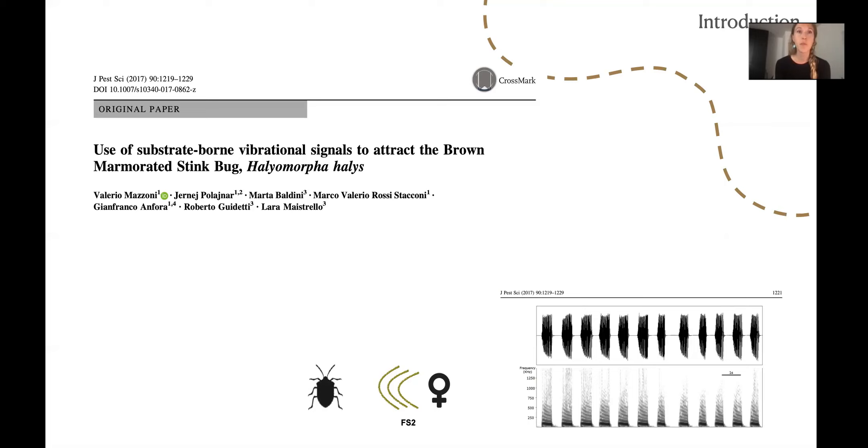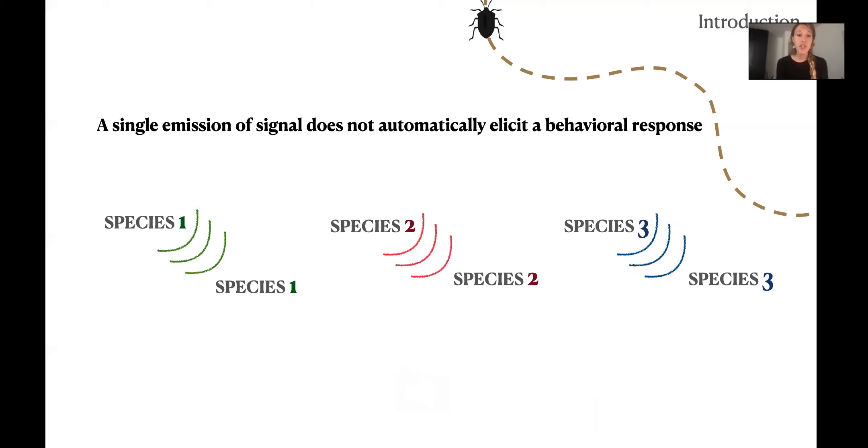This is how it sounds, the vibration of the female. And once you play that, the males are attracted to it. The results of this work demonstrated that FS2 can be used to capture males.